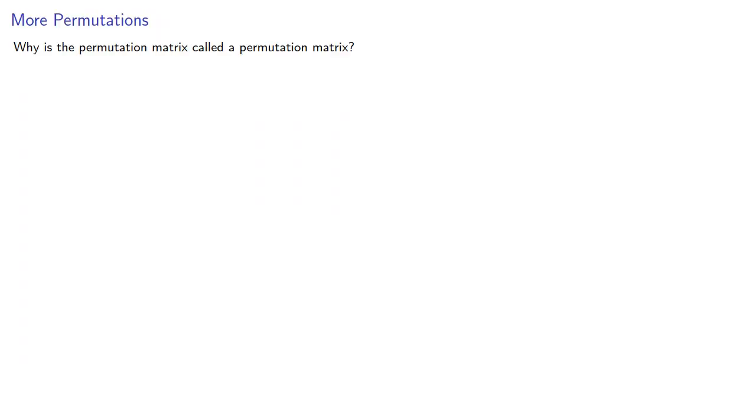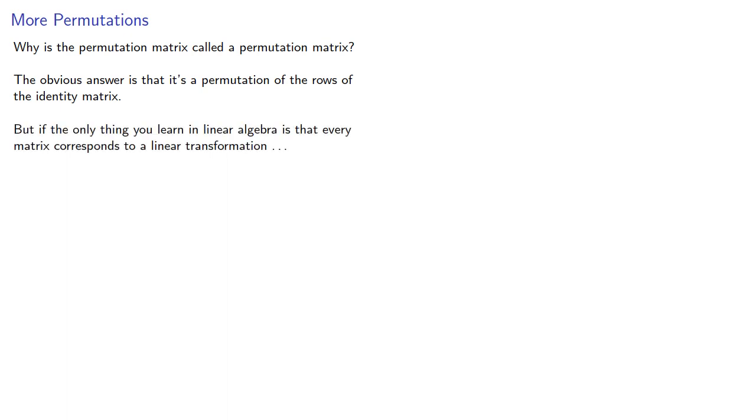Now why is the permutation matrix called the permutation matrix? The obvious answer is that it's a permutation of the rows of the identity matrix. But if the only thing you learn in linear algebra is that every matrix corresponds to a linear transformation, you'll probably fail the class as there's a lot more you should be learning.